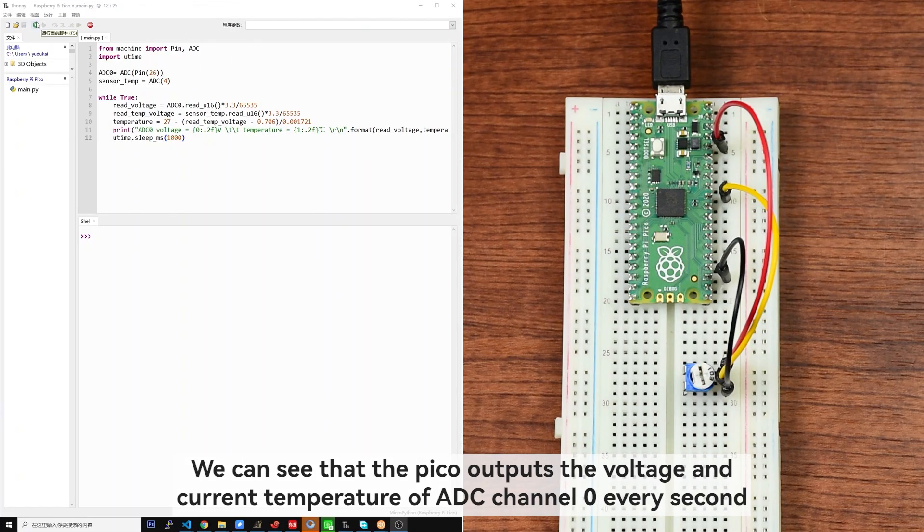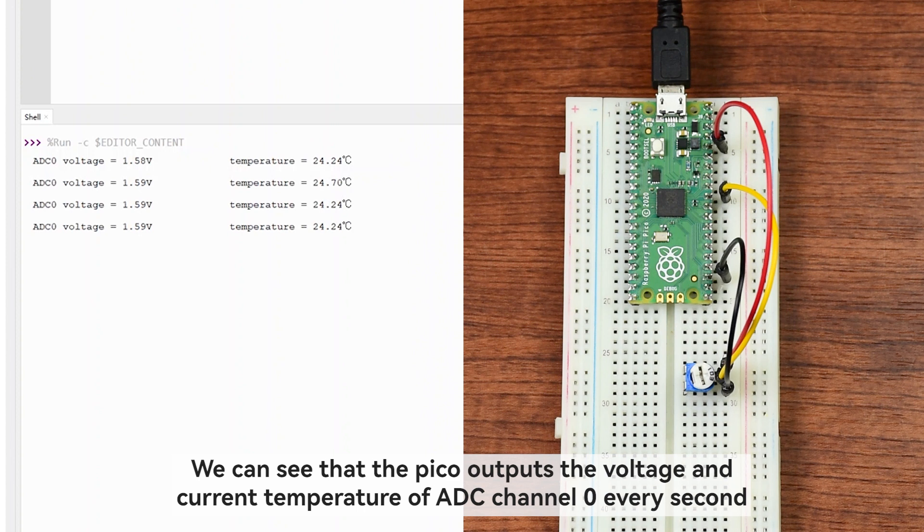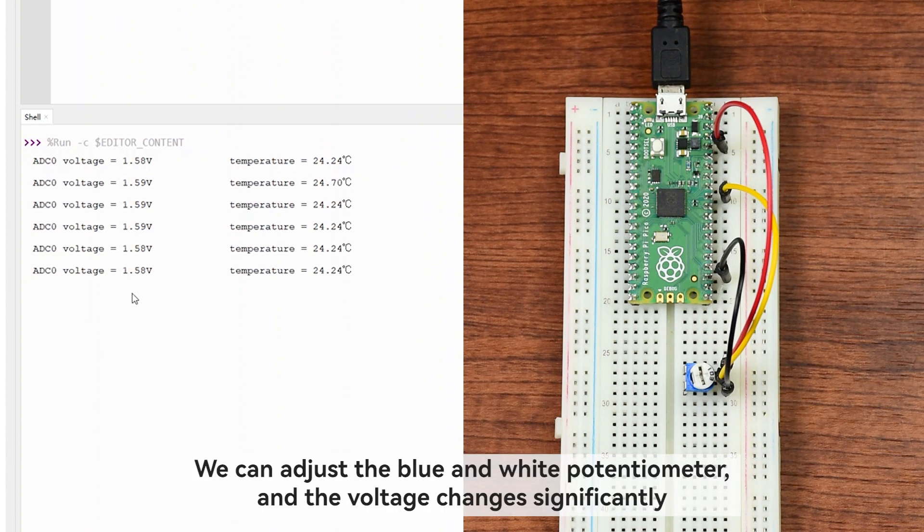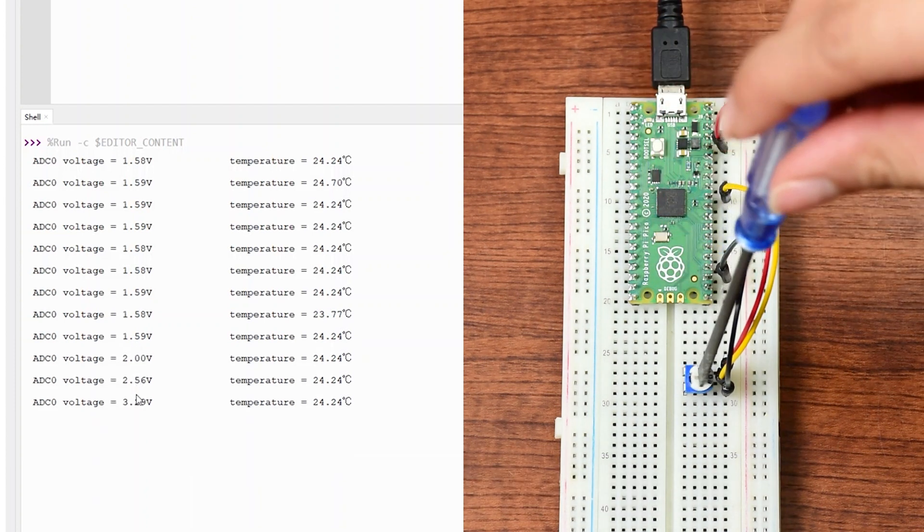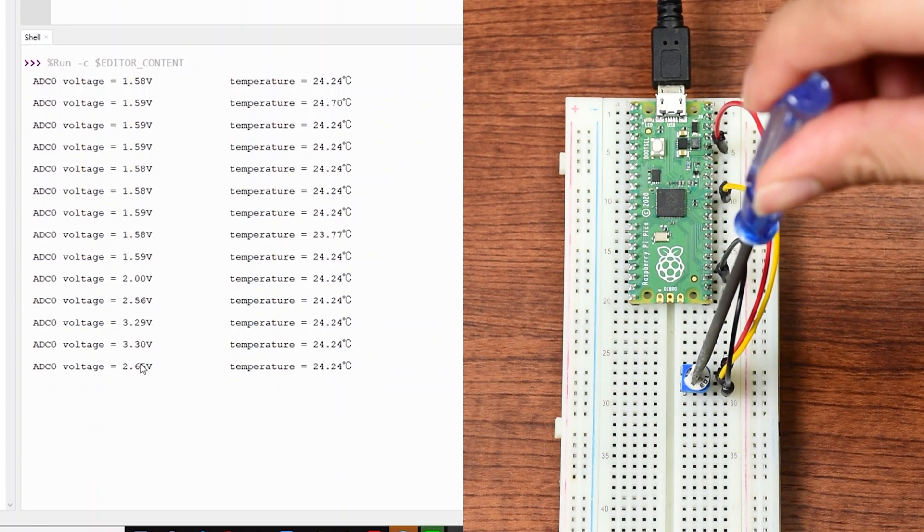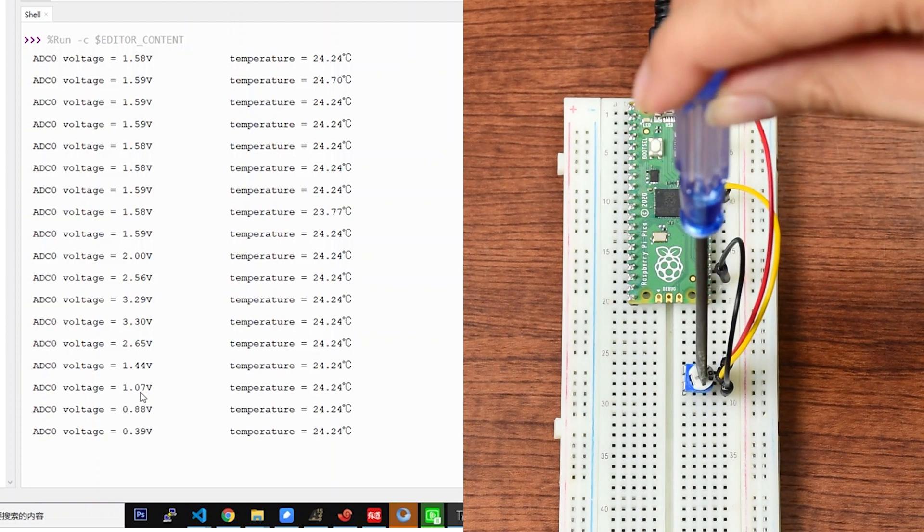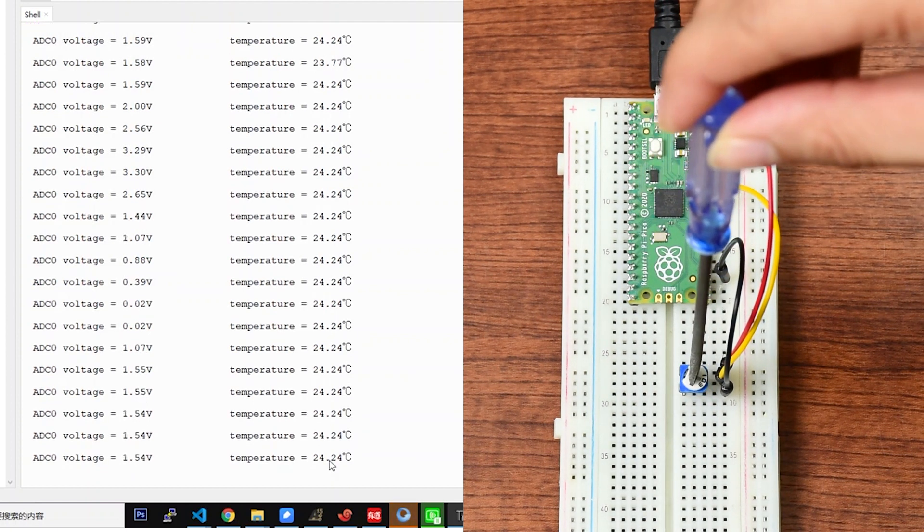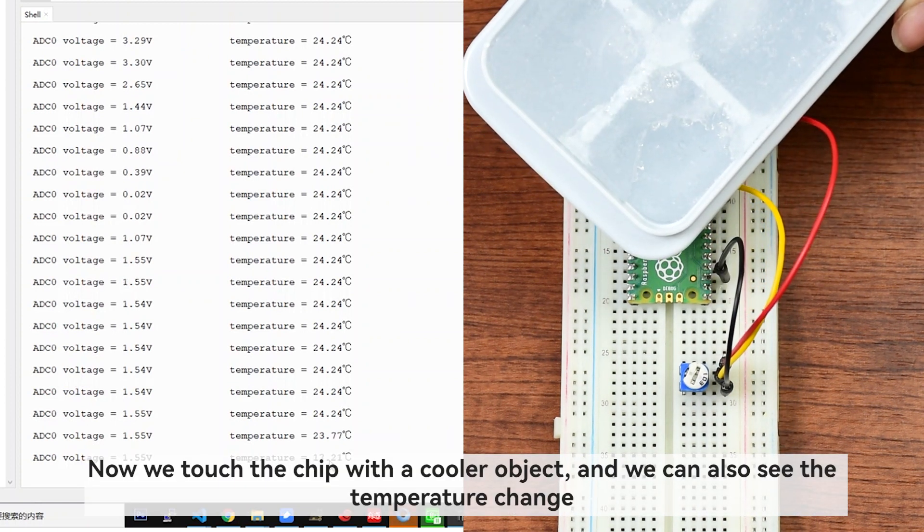We can see that the PICO outputs the voltage and current temperature of ADC channel 0 every second. We can adjust the blue and white potentiometer, and the voltage changes significantly. Now we touch the chip with a cooler object, and we can also see the temperature change.